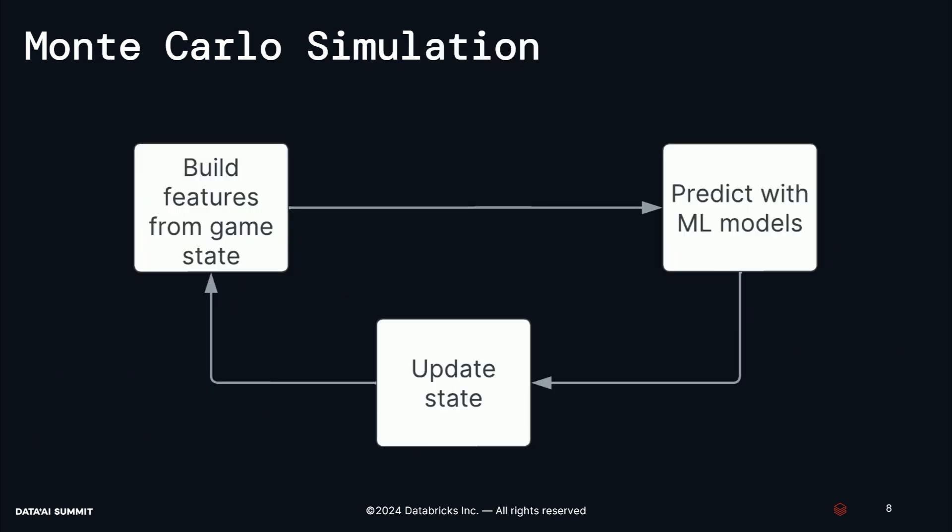Onto Monte Carlo simulation. Monte Carlo simulation is a statistical technique for estimating a distribution with repeated random sampling. In our case, we will simulate a game tens of thousands of times. Within each single game simulation we perform a loop: starting with our features from the game state — the current score, quarter, time on the clock, et cetera — we make predictions with our machine learning models to determine what happens in the next play. That gives us an updated state with the outcome of the play, and then we repeat, calling our models millions of times to generate these predictions.